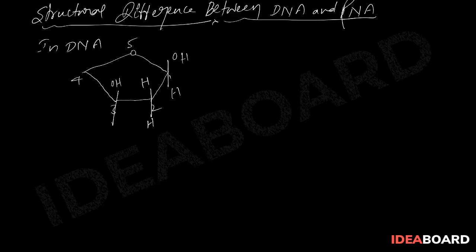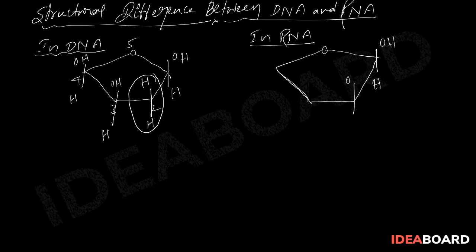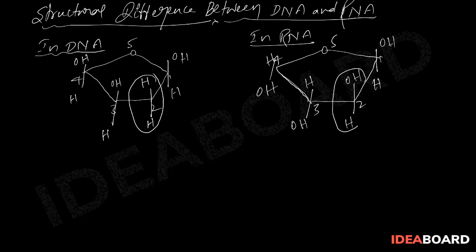At all remaining positions, both hydroxyl and hydrogen groups are present. When it comes to RNA, in the ribose molecule at all positions — 1, 2, 3, 4, and 5 — oxygen is present in the form of hydroxyl groups. So the main difference between the ribose of DNA and RNA is at the 2nd position only.